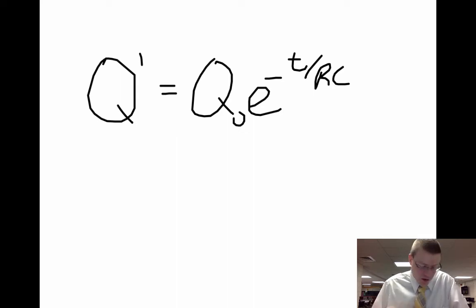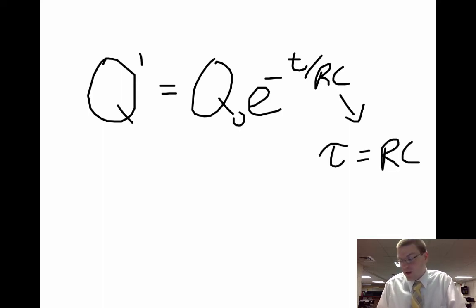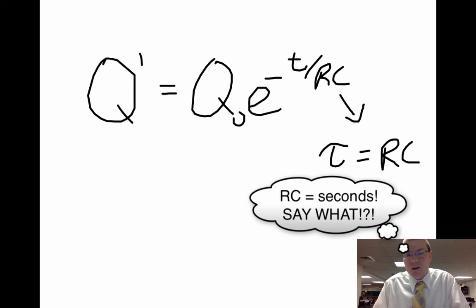And RC, we're going to call that our time constant. And we'll write that sometimes as tau. So tau gives us our time constant. That means that a resistance times a capacitance needs to give us a unit of seconds so that I can do time divided by time so that I just have to do e to the negative power.